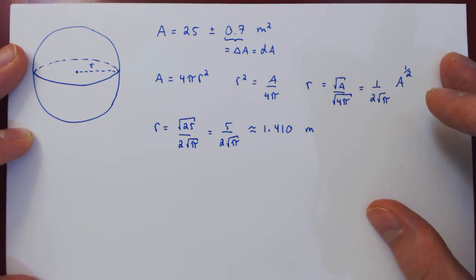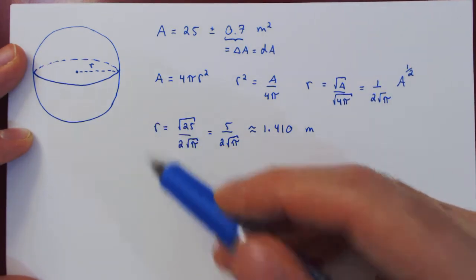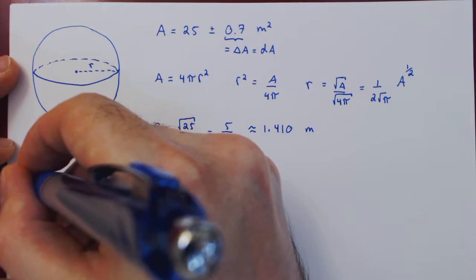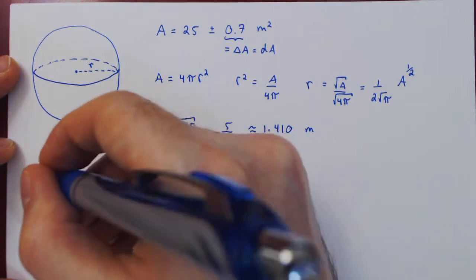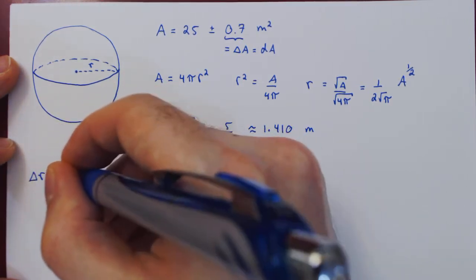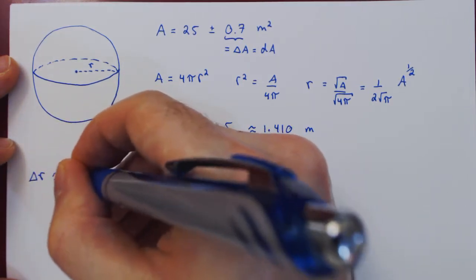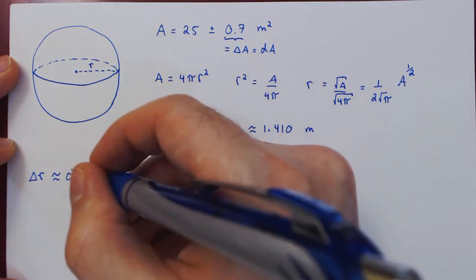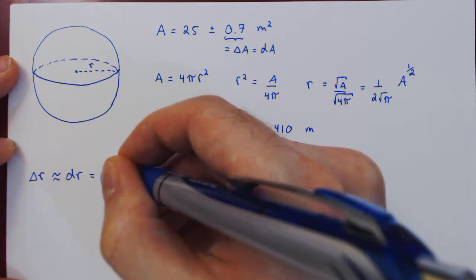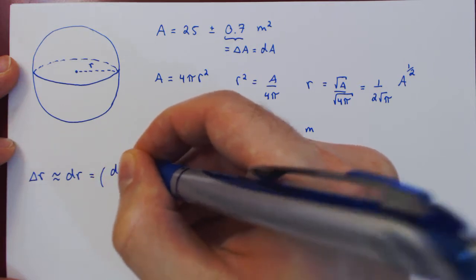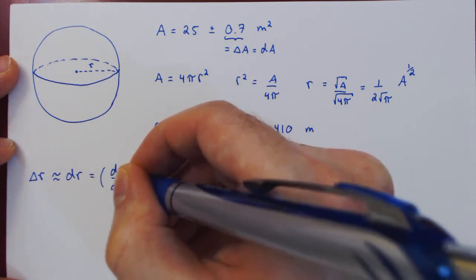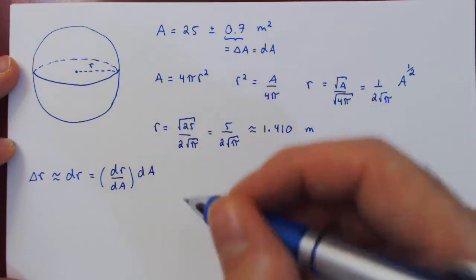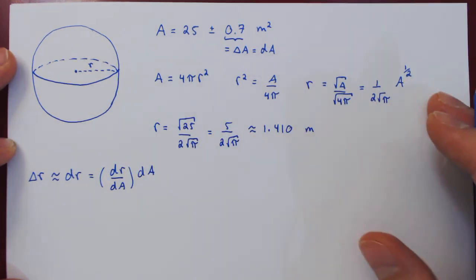We also need the uncertainty of the radius. This is a small change in the radius, delta R, which we approximate with the differential dR. Since R is a function of A, the differential is the derivative of R with respect to A, times dA, the change in the independent variable.